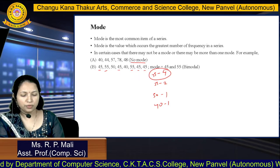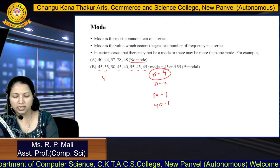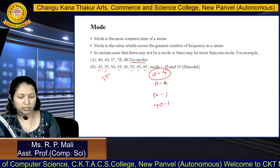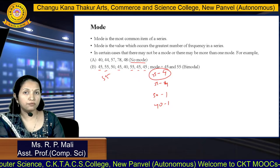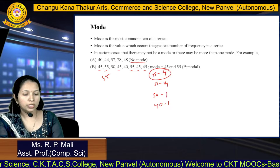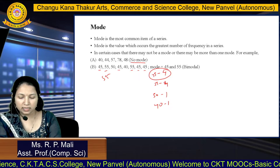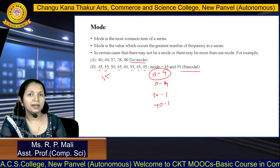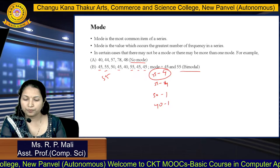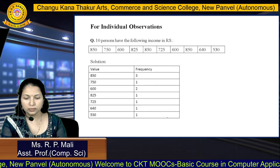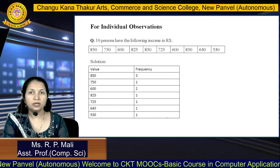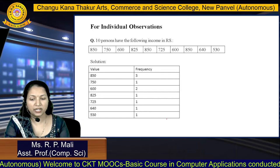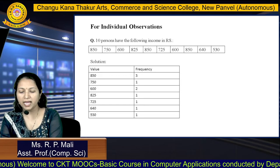If you have a case where 55 also appears the same number of times, you can consider this series as bimodal. Bimodal means it is having two modes. First, we are going to solve the example for your individual observation.